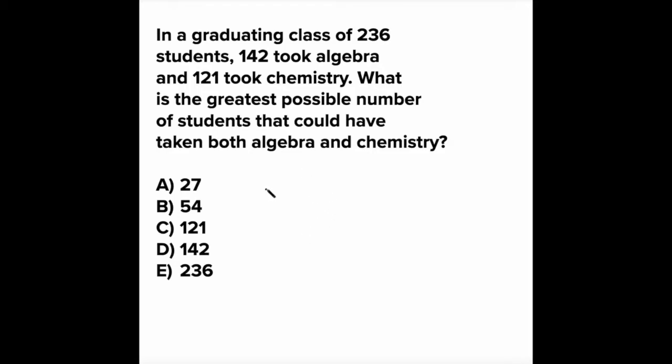Well, the easiest way to see this is to represent it in a Venn diagram. And so what we have here is a universe with 236 people overall, right? As we're going to see, that's not actually super relevant. 236 people overall.